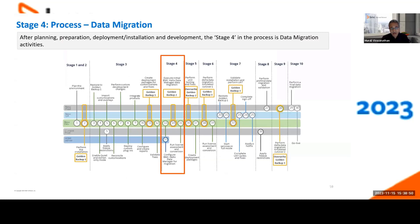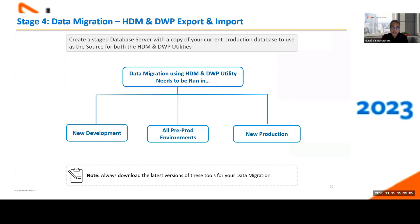Let's look at stage four. Now that you've completed installation, deployment, customizations, integration configuration, and any new development, it's time for data migration. We have two primary utilities: the Helix Data Manager (HTM) and the DWP utility, which covers the Digital Workplace application with export and import options. We strongly encourage you to run data migration in all your environments — development, non-prod like QA/SIT/pre-prod, and production. Always download the latest versions of these tools.